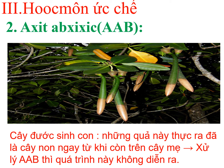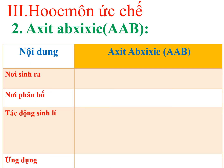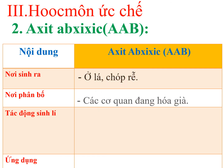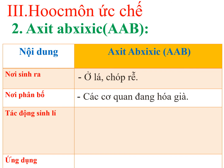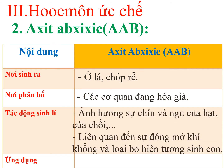Quan sát hiện tượng sinh con ở cây đứa: những quả này thực ra đã là cây non ngay từ khi còn trên cây mẹ - người ta gọi đây là hiện tượng sinh con. Nếu xử lý bởi acid abscisic (ABA) thì quá trình này không diễn ra, điều đó chứng tỏ ABA sẽ loại bỏ hiện tượng sinh con ở thực vật. Đối với hormone acid abscisic: nơi sinh ra là ở lá, ở chóp rễ; nơi phân bố ở các cơ quan đang hóa già; tác động sinh lý là ảnh hưởng đến quá trình sinh trưởng và phát triển của thực vật.